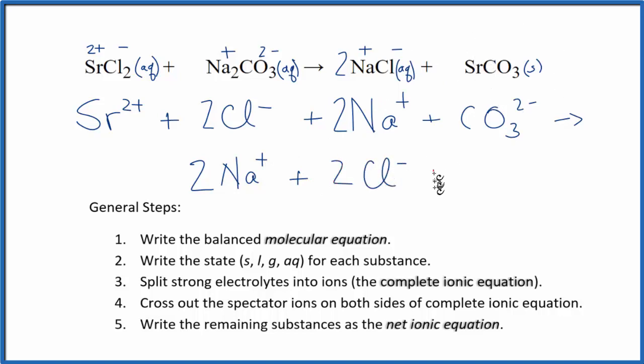And then over here, we said with our strontium carbonate, this is a solid. It's a precipitate that is falling to the bottom of the test tube. So it's not split apart in the test tube, and we're not going to split it apart in our net ionic equation either. We're just going to write SrCO3, strontium carbonate, which is a solid. So we have our complete ionic equation now.